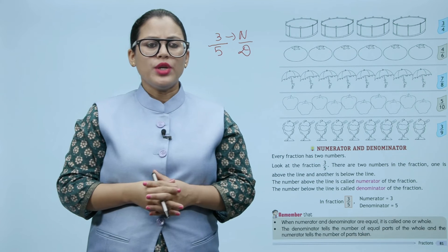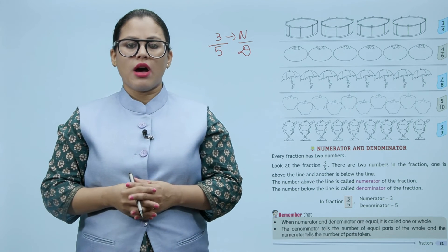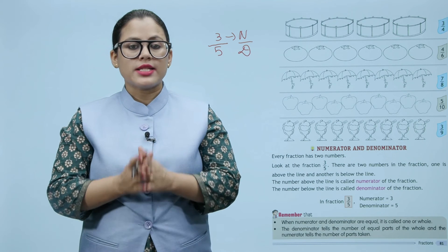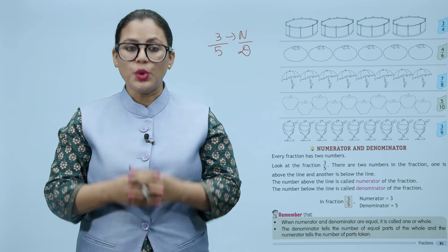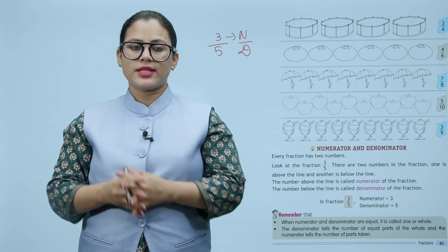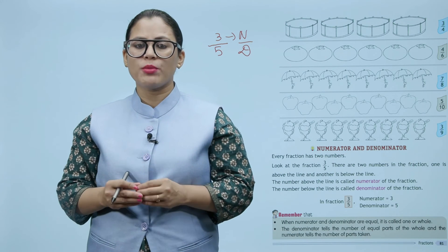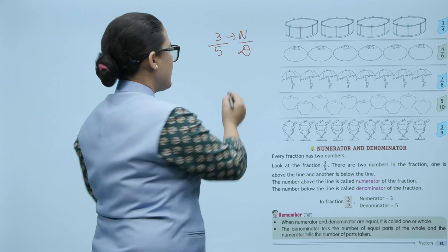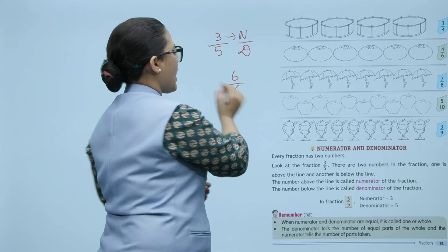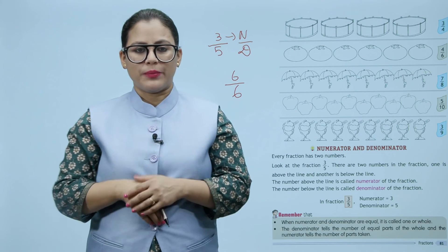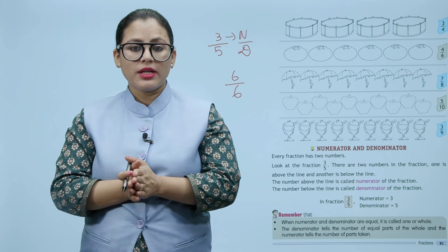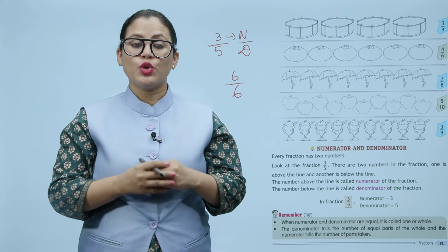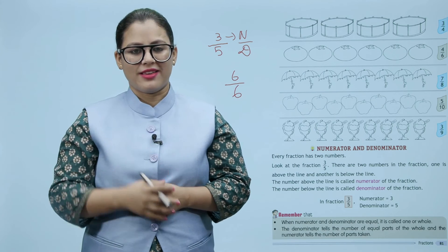Remember that when the numerator and denominator are equal, it is called one or whole. The denominator tells the number of equal parts of the whole, and the numerator tells the number of parts taken. Jab numerator aur denominator equal hote hain toh usse one ya whole kahte hain — for example, six by six. Denominator aapko batata hai ki us whole ke kitne equal parts hain, aur numerator batata hai ki usme se kitne parts liye gaye hain.